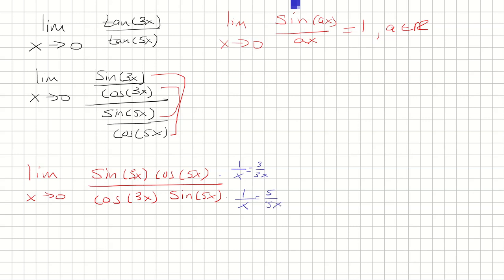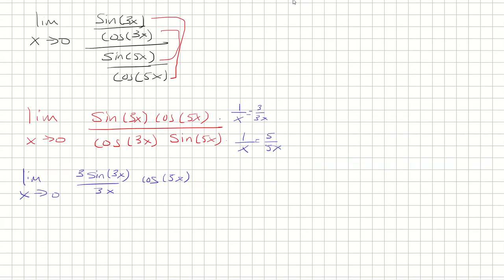So now I can multiply, and I have 3 times sine 3x over 3x times cosine 5x, all over 5 times cosine 3x times sine 5x over 5x.